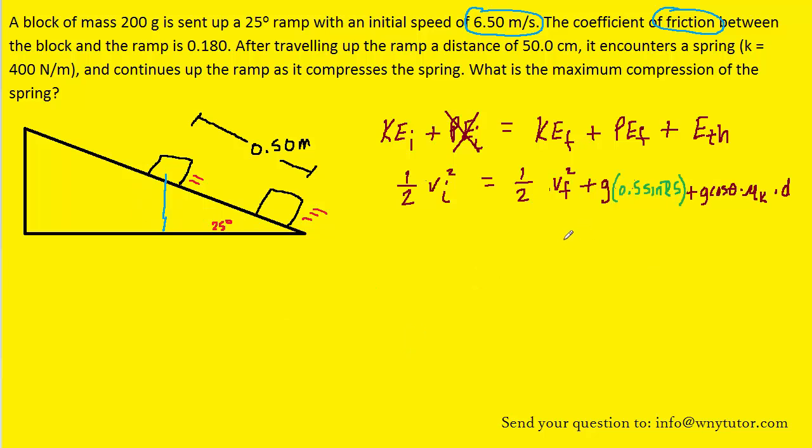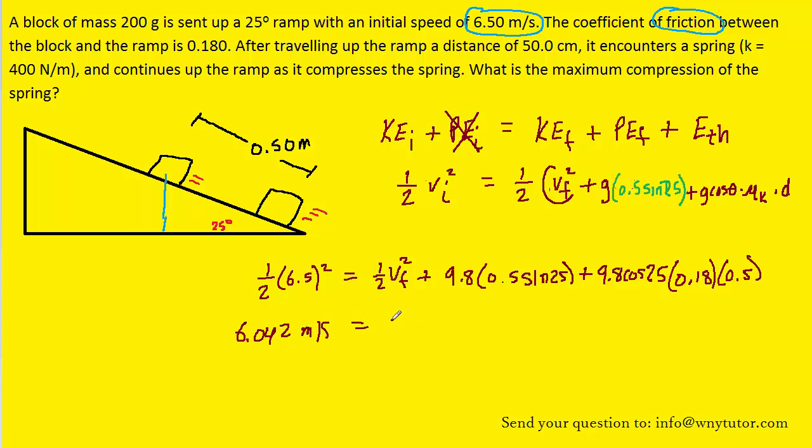Now everything in this equation is known except for the final velocity, so let's plug in all the known values next. And then we can use our algebra skills to solve for the final velocity. We should get approximately 6.042 meters per second equal to that final speed of the block at this point of its motion. So that's part one of the problem.